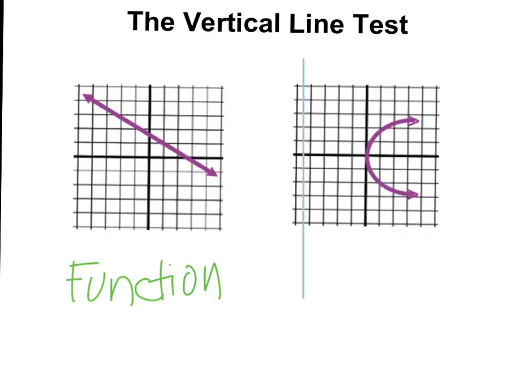However, in our second graph, if I put this line over the graph, I see that it does cross at more than one point. This means that it's not a function.